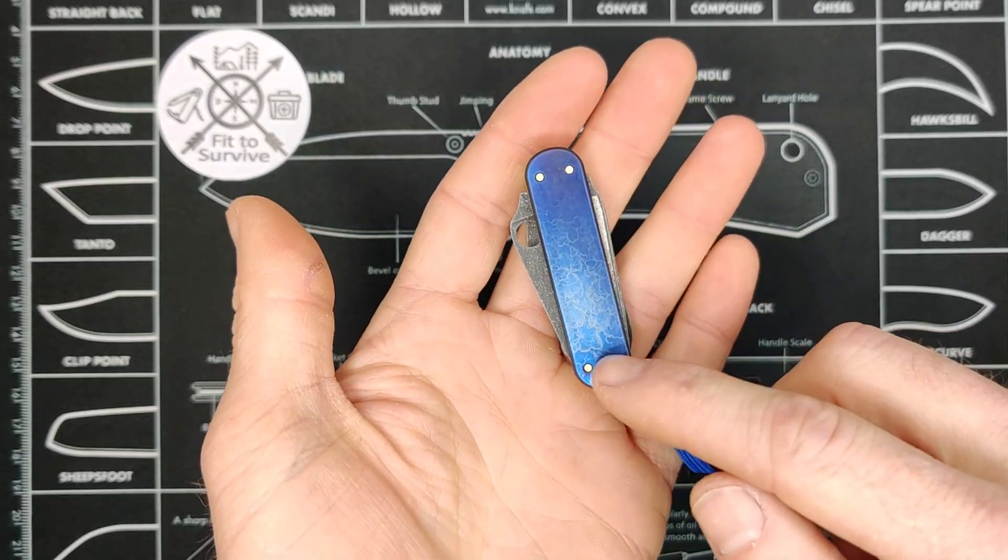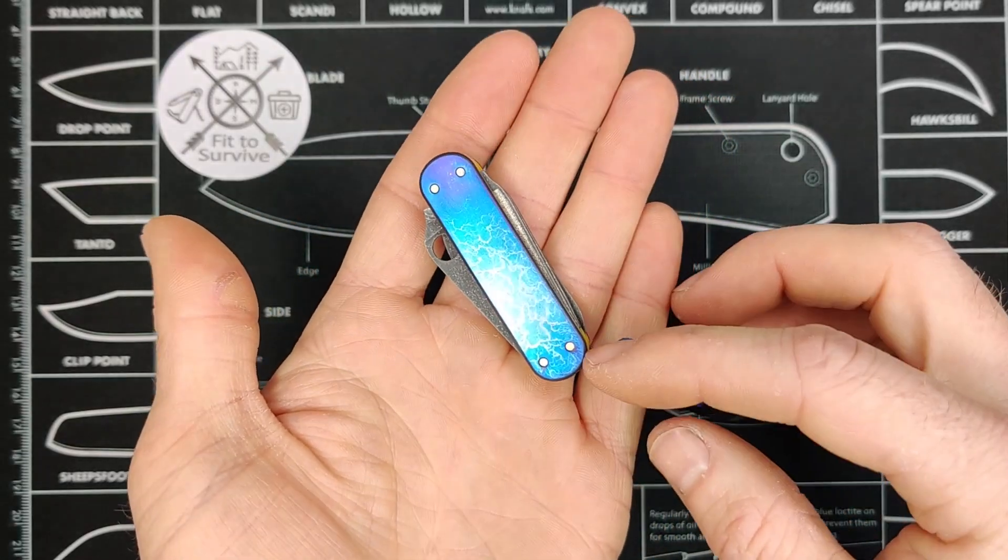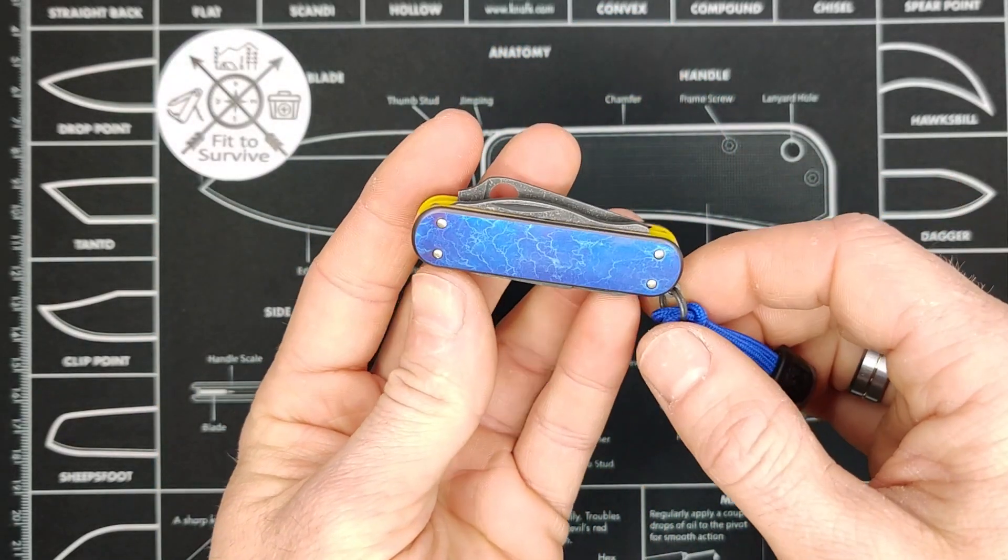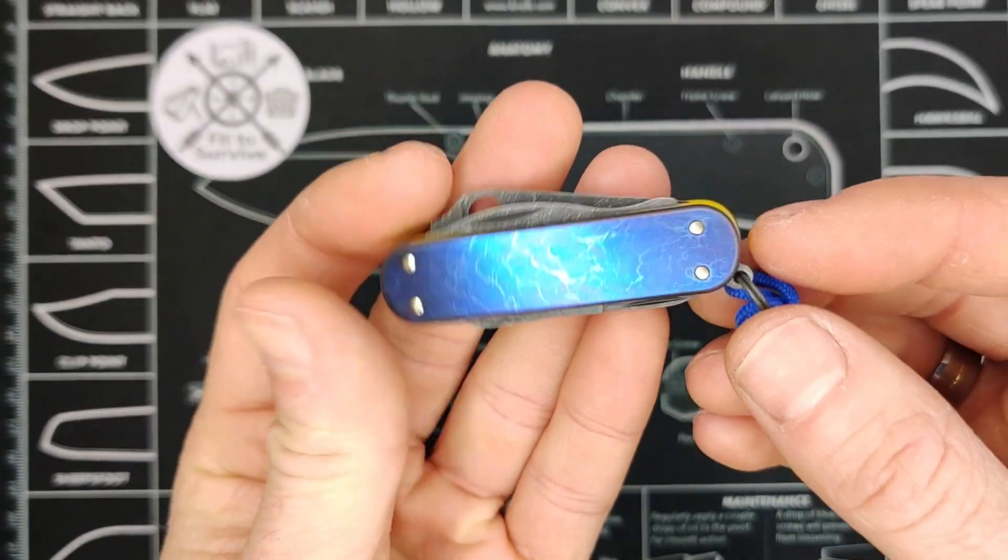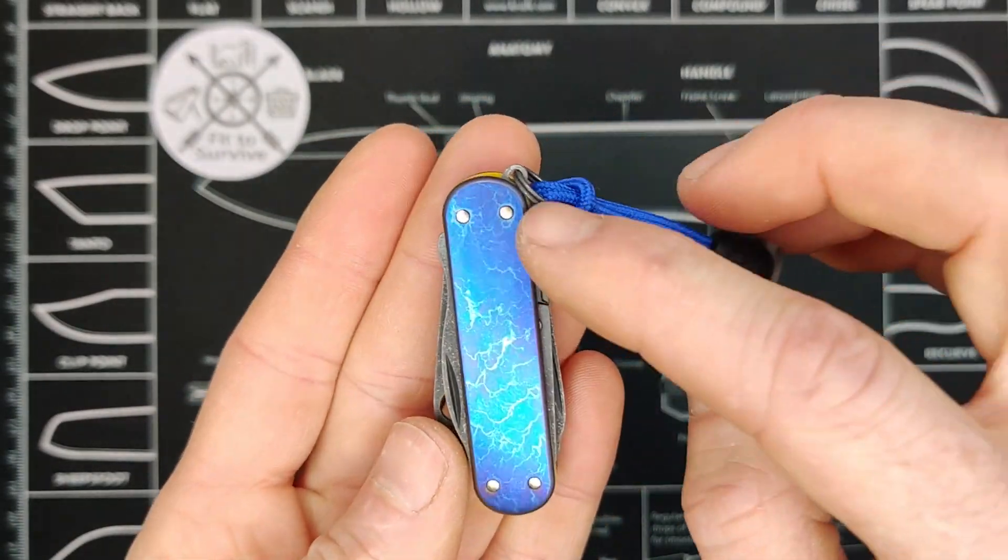All right, something else to notice is that there's no accessories. So no tweezers, no pick. And also, you can see that they've been peened shut. So you see the peening work.